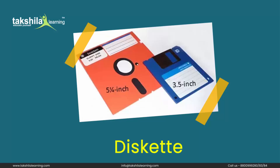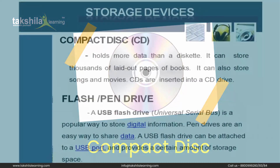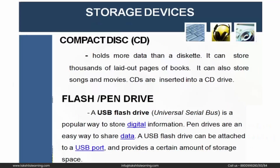The floppy disk can store a limited amount of data because it is handy and can be used in different computers. It fits into a slot called a disk drive. It is also called floppy disk and was used by banks and other corporates in earlier times, but it has been replaced by CDs and DVDs. Compact disk holds more data than a floppy disk — it can store thousands of pages of a book, songs, and movies. It is inserted into a CD drive in the computer.